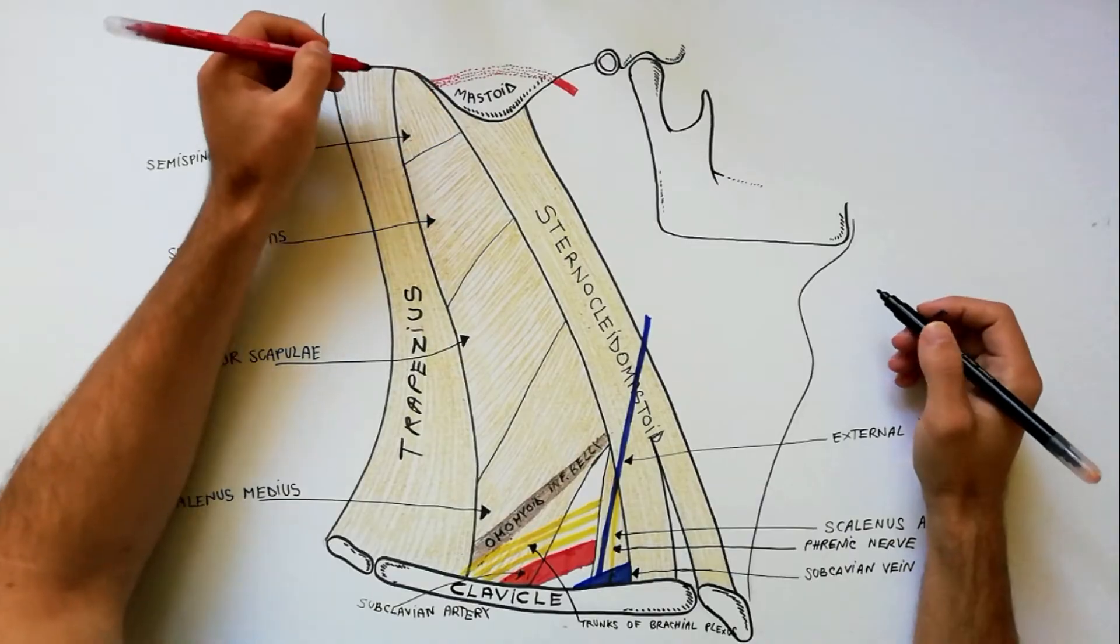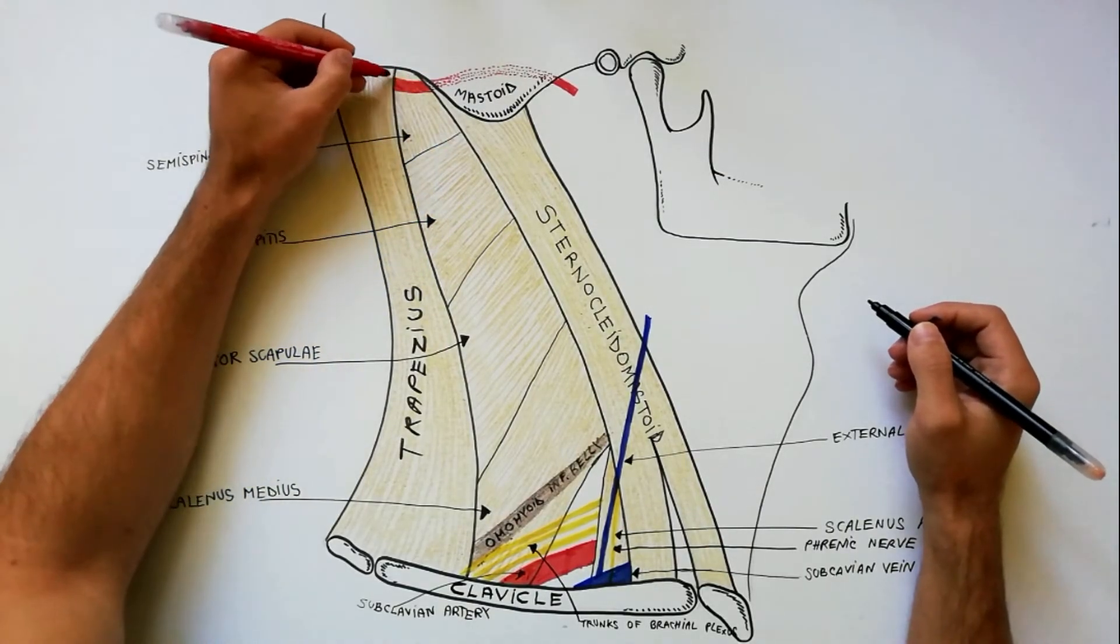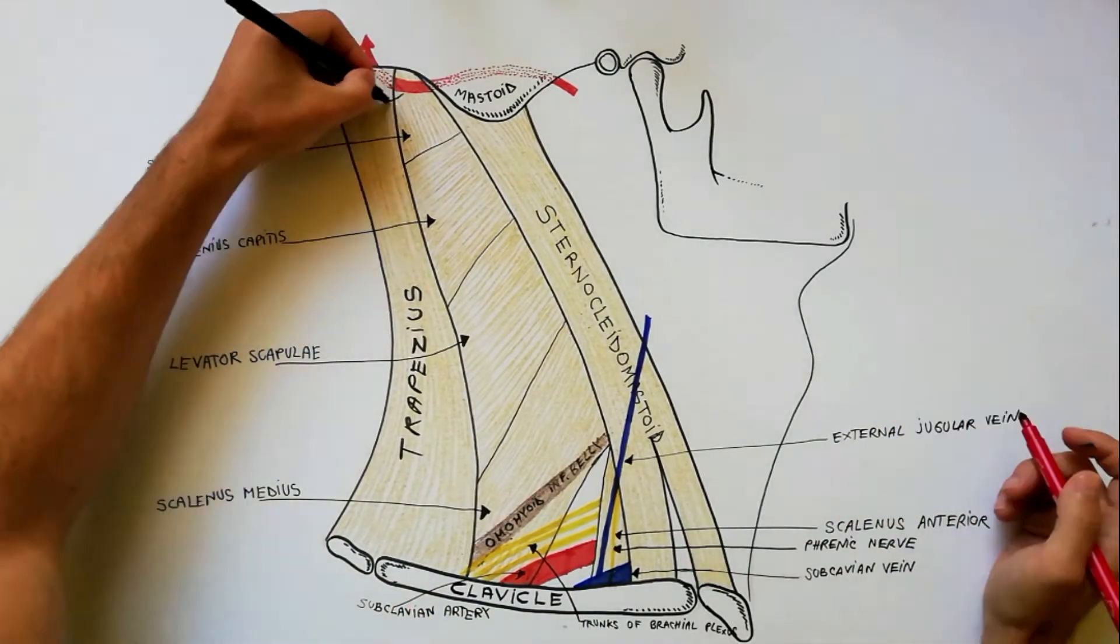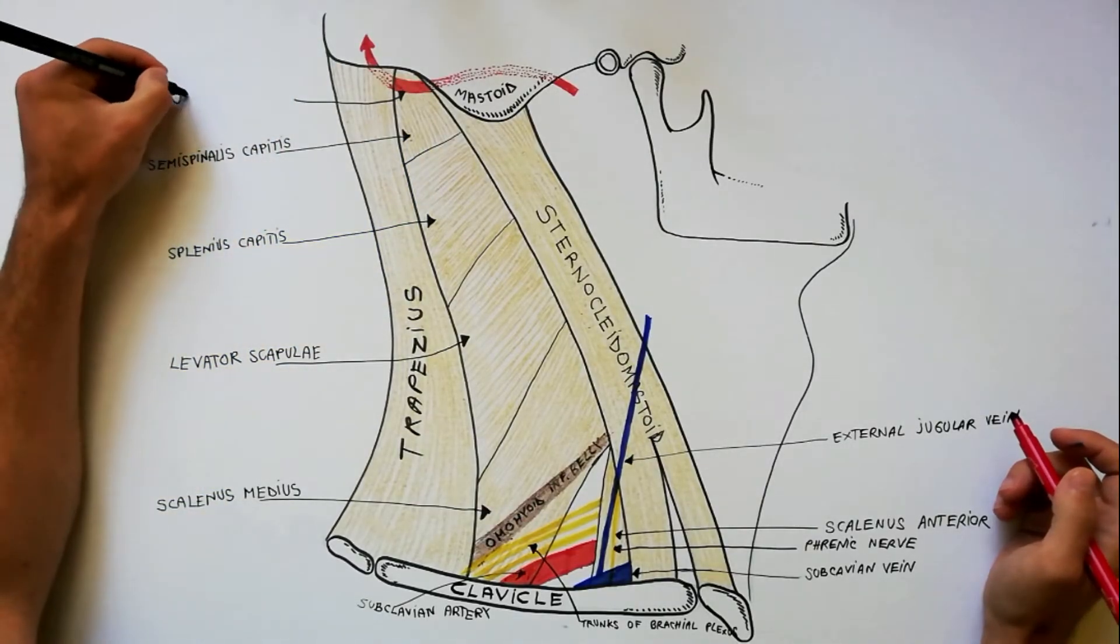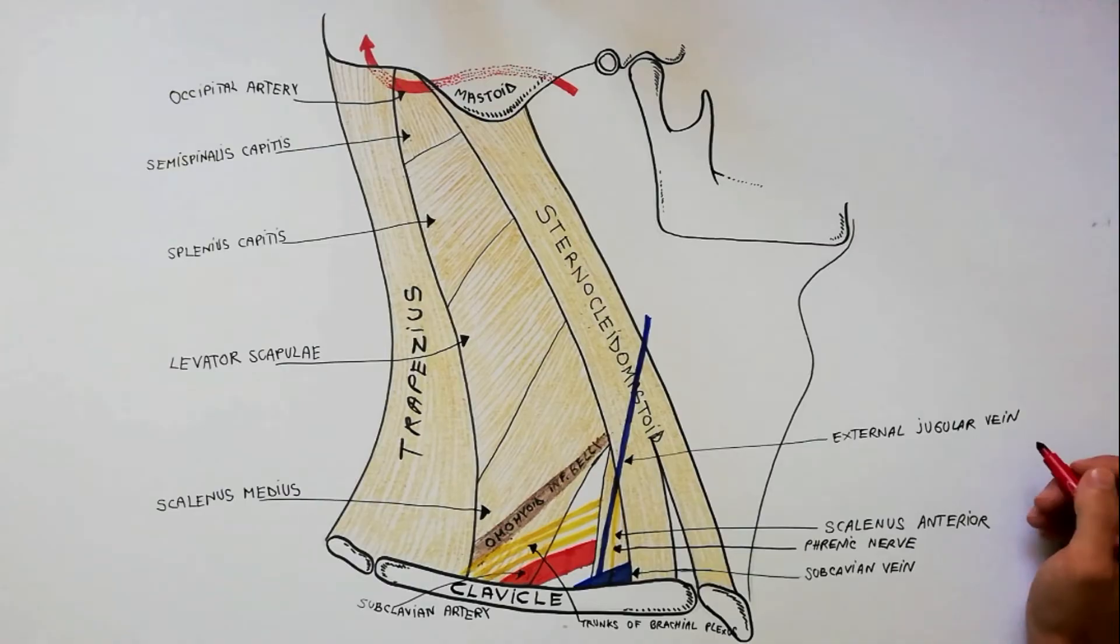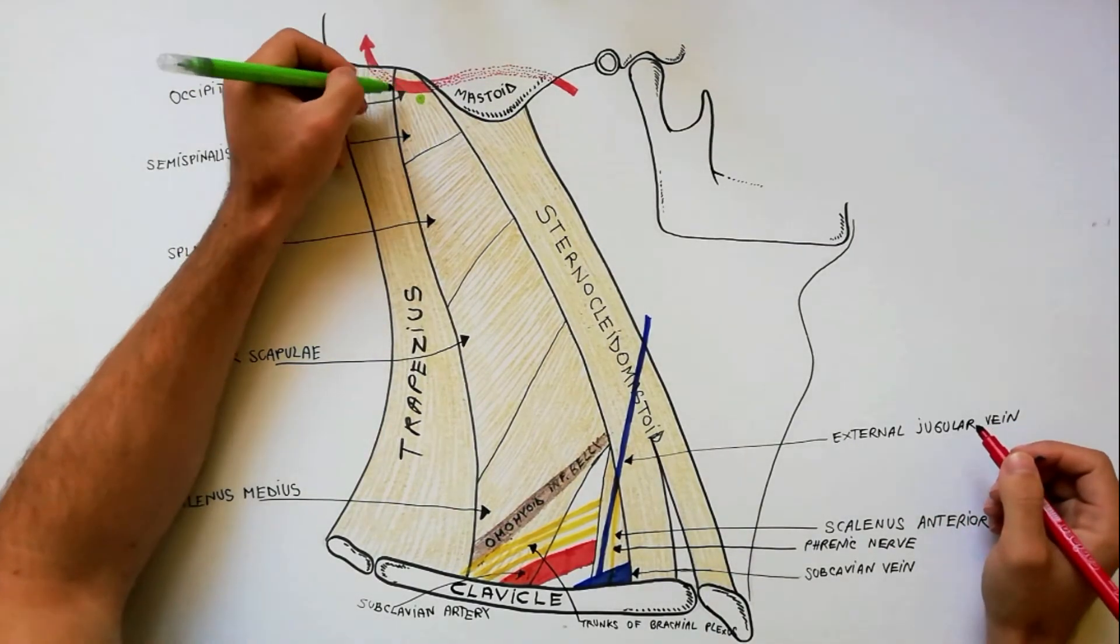In the occipital triangle are present the following structures. The occipital artery is a branch of external carotid artery. It crosses the apex of the triangle superficial to the semispinalis capitis. Some occipital lymph nodes are present around the artery.